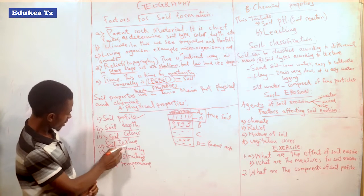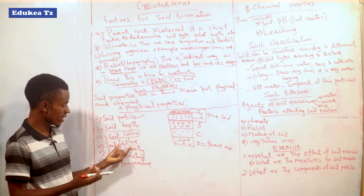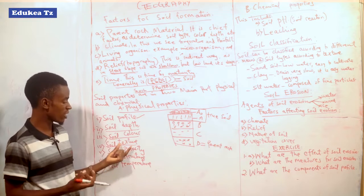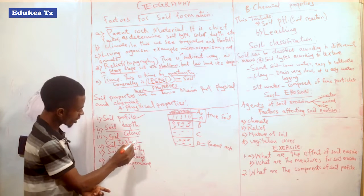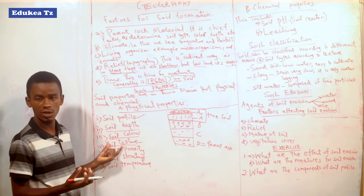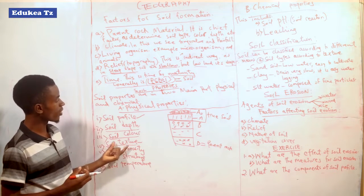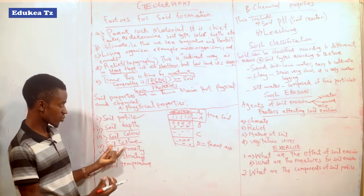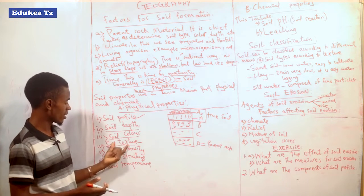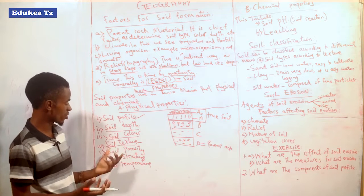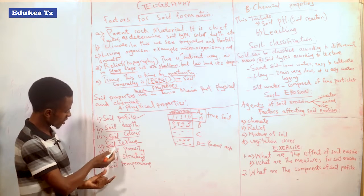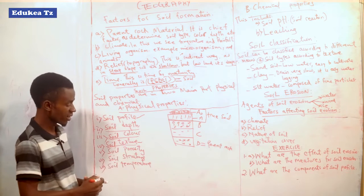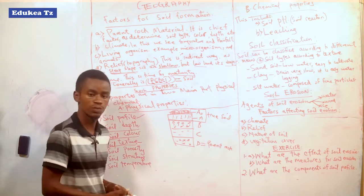Another physical property is soil texture. Texture means the degree of fineness and coarseness of the soil particles — we can say the size of the soil particles. There are larger sizes and smaller sizes of soil particles, and others are moderate. From soil texture we get clay soil, silt soil, and sandy soil.